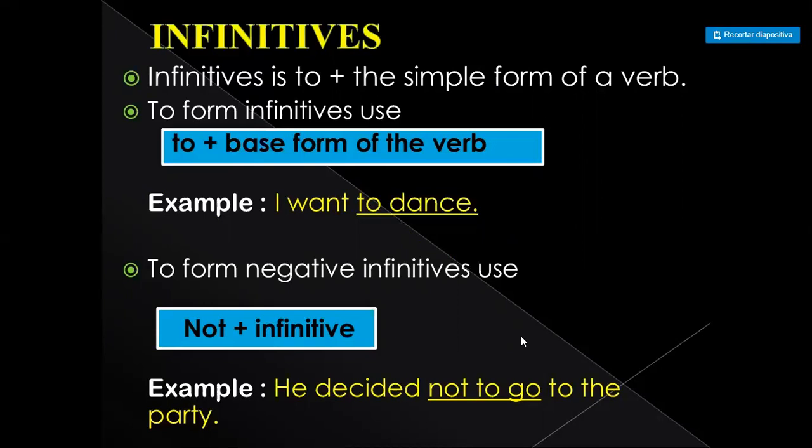Now, infinitives. An infinitive is 'to' plus the simple form of the verb. To form an infinitive, use 'to' plus the base form of your verb. Example: 'I want to dance.' To form the negative infinitive, use 'not' plus the infinitive. Example: 'He decided not to go to the party.'